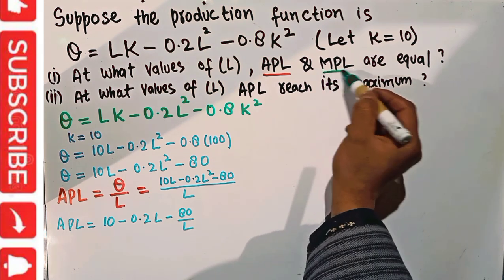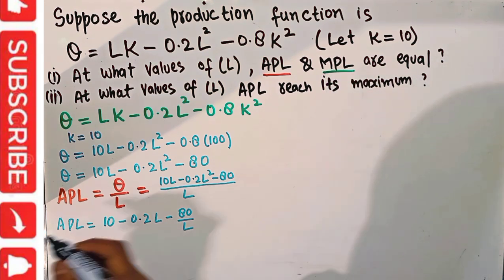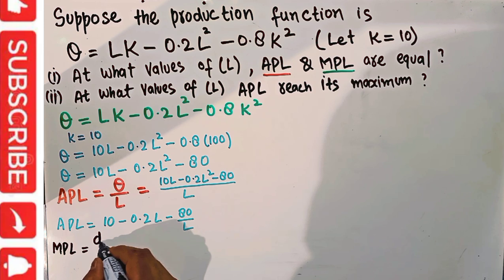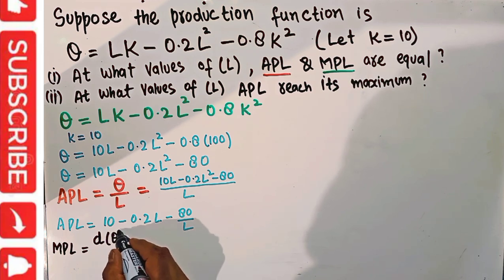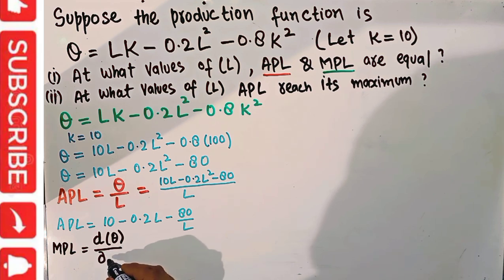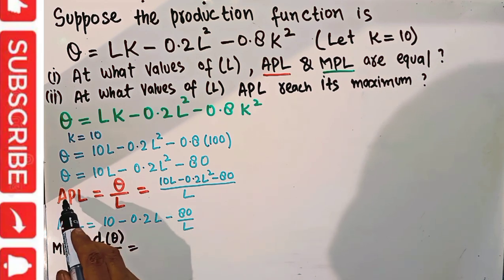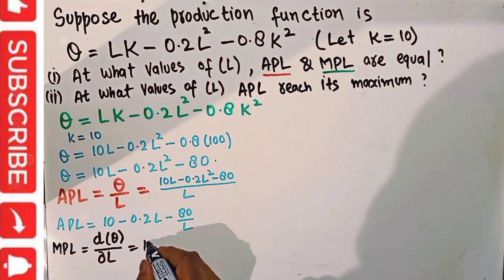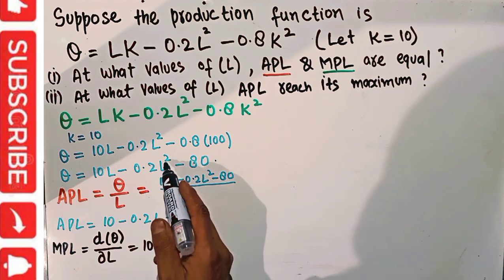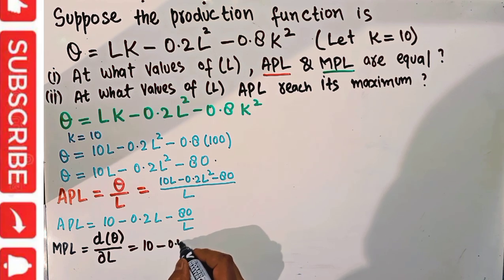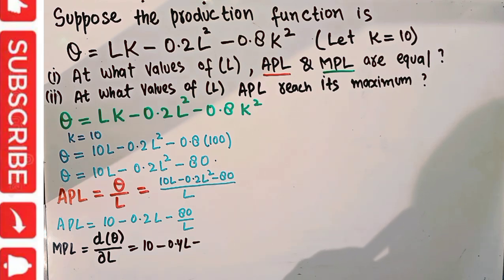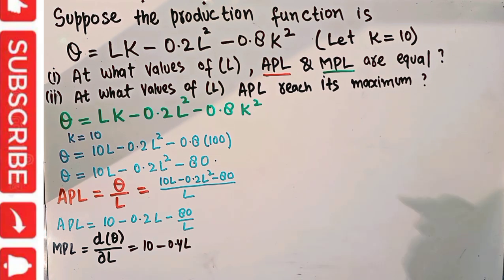Next, we find the marginal product of labor. MPL is the change in output with respect to the change in units of labor — that is, we differentiate the production function with respect to L. The derivative of 10L is 10, derivative of 0.2L² is 0.4L, and the derivative of the constant 80 is 0. So MPL = 10 − 0.4L.